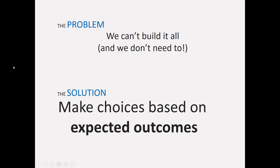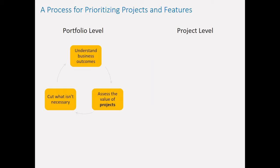We can't build everything. With IT projects being cut and the pressure to deliver faster, we can't build it all. But the good news is I don't think we need to build it all — there are lots of features that just aren't that important. The solution I'll propose is that we need to figure out how to make choices about what to build or not build based on the expected outcomes we're trying to achieve.